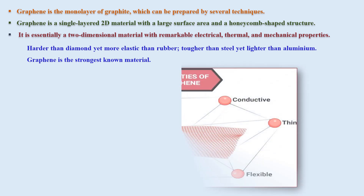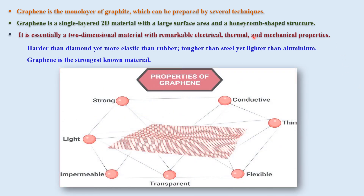Graphene is said to be the monolayer of graphite which can be prepared by several various chemical methods or techniques. Graphene is a single-layered two-dimensional material with a large surface area and honeycomb-shaped structure. This particular graphene has various remarkable electrical, thermal and mechanical properties. These all are members of the carbon family, and diamond is said to be the hardest member, while graphene is a very promising and famous nanomaterial as well.